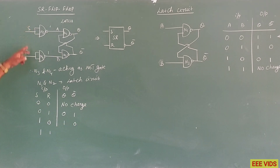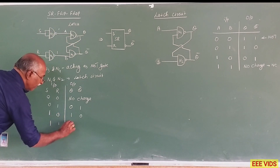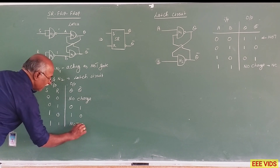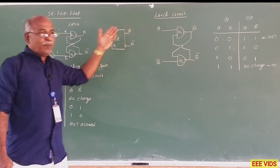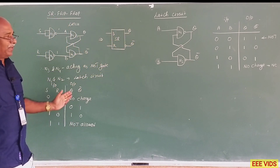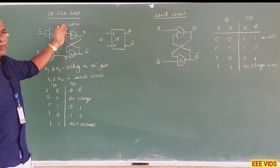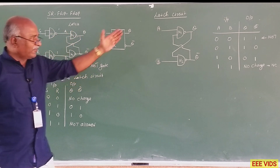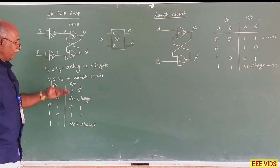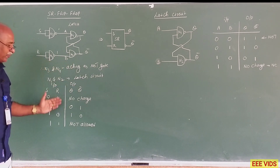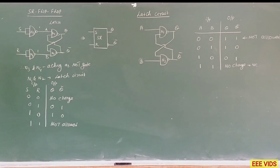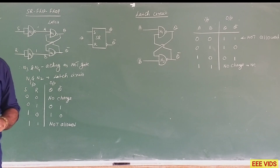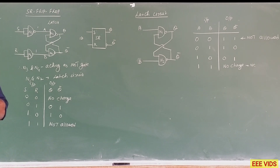So 1,1 — this status is not allowed. So in the SR flip flop, in the latch circuit, the output is complement. We can use the NOT gate. A and B input is complement, and the latch circuit output is complement. So the output is complement. So if you have 0,1 then you have 0,1. If it is NOT allowed, then you have no change. So this is the SR flip flop — here is the NOT allowed status. This is how we eliminate it.